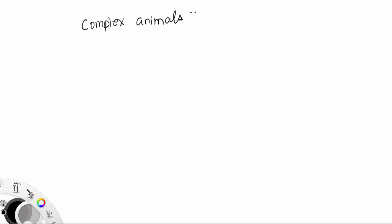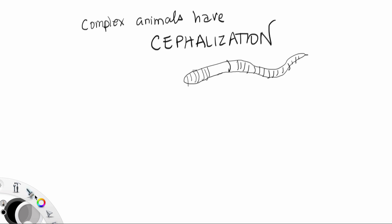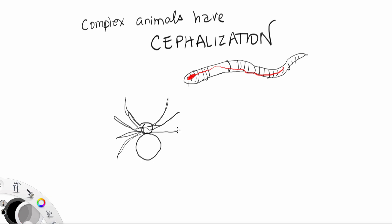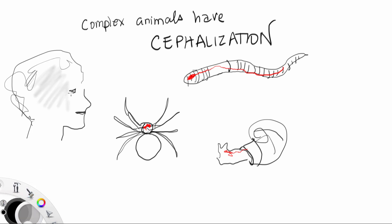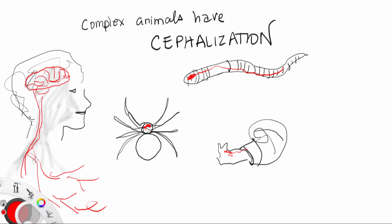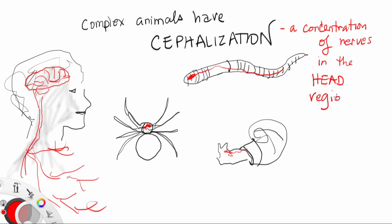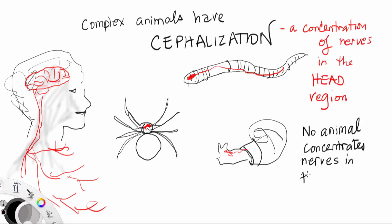Complex animals have cephalization — they have more nerves in the head region than in any other part of their body. In particular, vertebrates even have a brain, which is a great concentration of nerves in the head region. Interestingly, nobody has nerves in their posterior end.